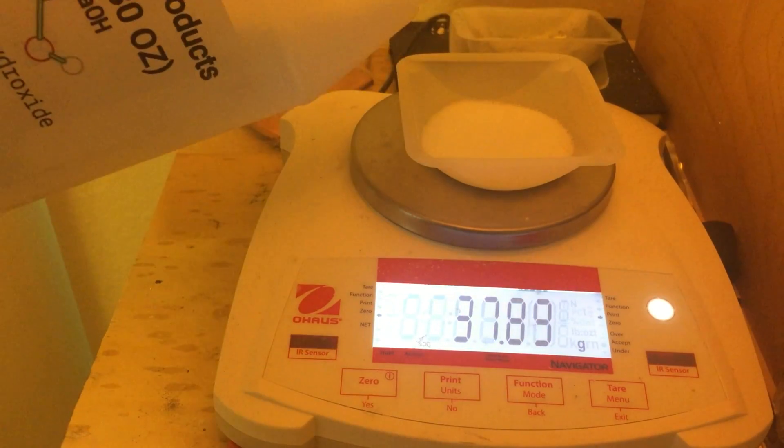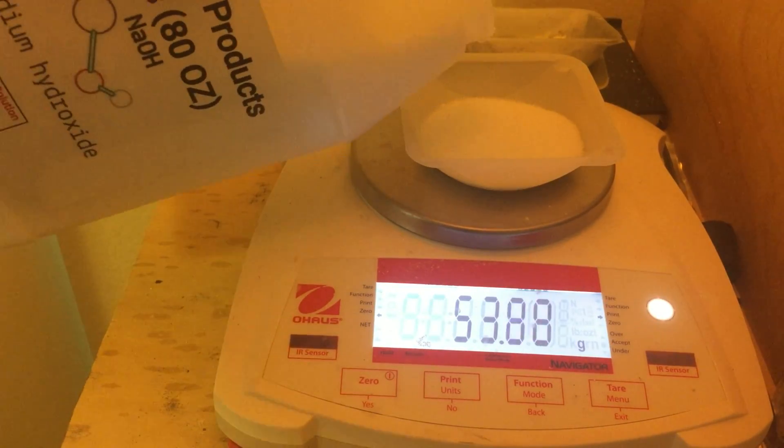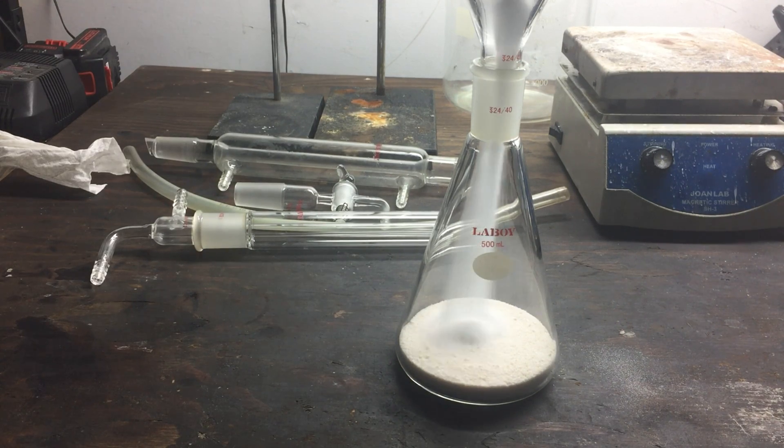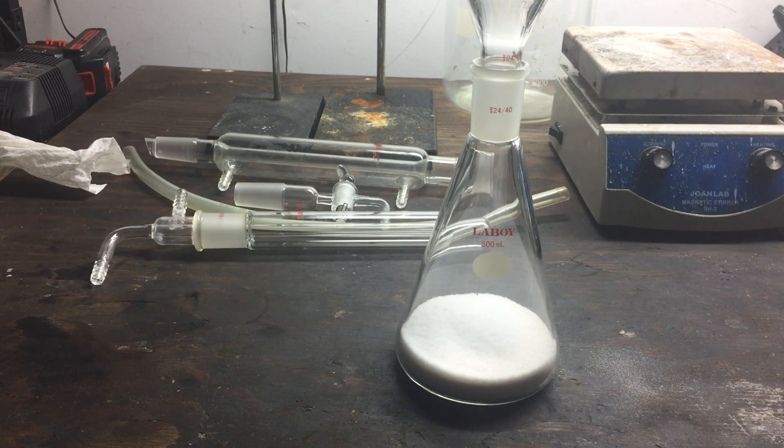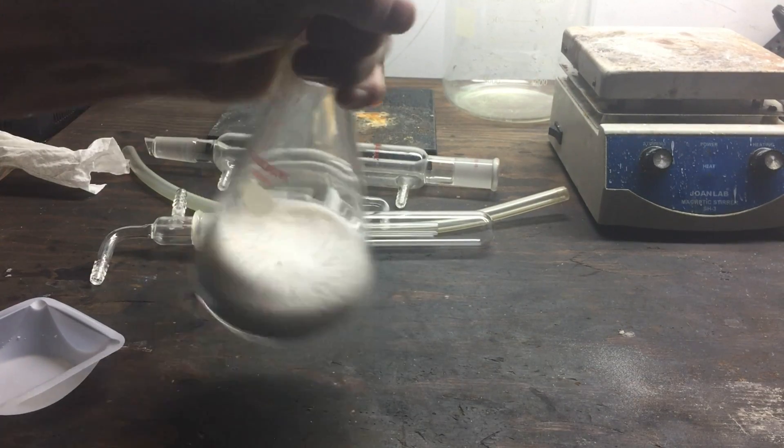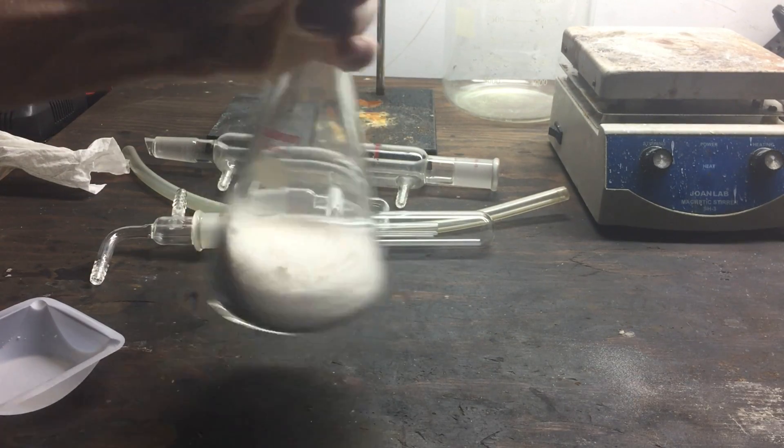Once the ammonium sulfate was added to the reaction flask, I needed to weigh out my sodium hydroxide. The sodium hydroxide was then added to the reaction flask as well, and the reactants were swirled in the flask to achieve a more homogenous mixture which will allow them to react quicker.